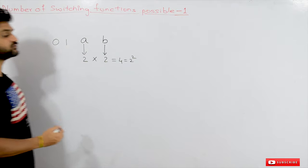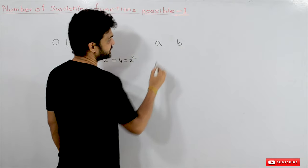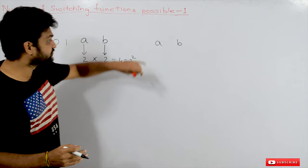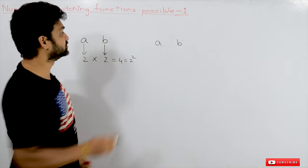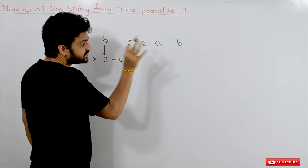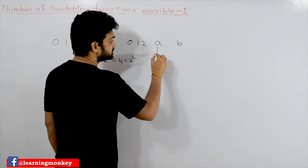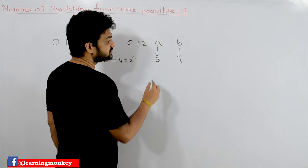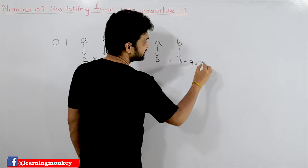Similarly, if you take two variables A and B and these variables are capable of storing three values — for example 0, 1, 2 — if each variable is capable of storing three different values, how many different combinations are possible? This variable can take three values and so can this one, so the number of combinations possible are nine, which can also be represented as 3 power 2.